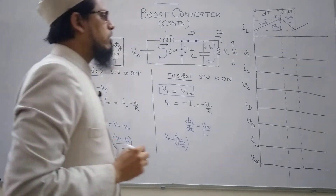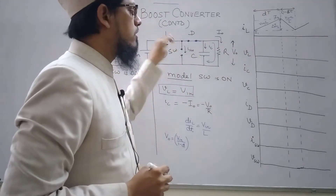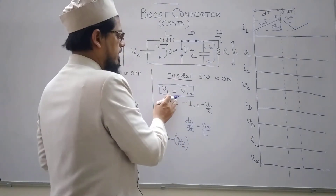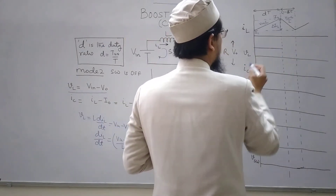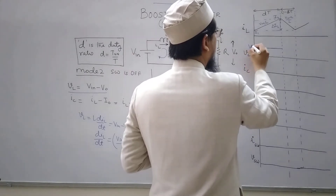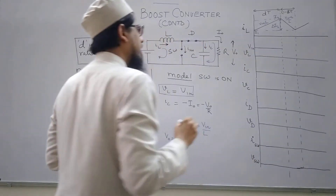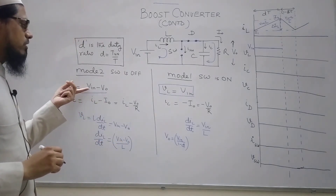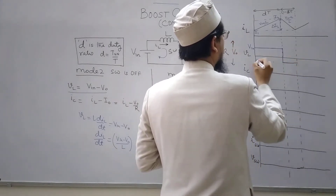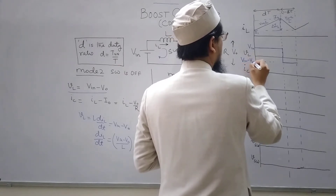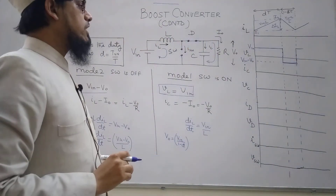Let us now look at the waveform of the voltage appearing across the inductor. This is quite simple because we have already derived the relations. VL = Vin when the switch is on — this is Vin. In mode 2, VL = Vin − V0, which is a negative value. Then it continues like this. This is the voltage waveform appearing across the inductor.